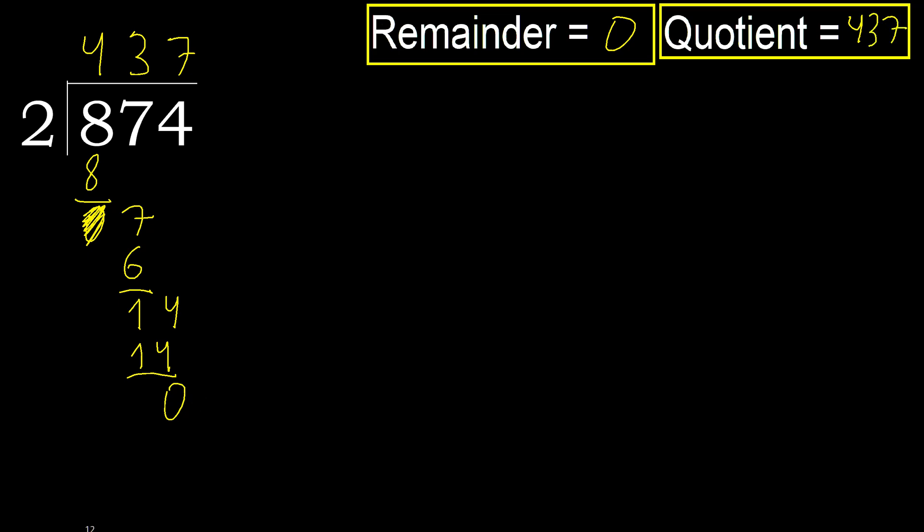Okay, 0. Therefore 874 divided by 2 is 437.